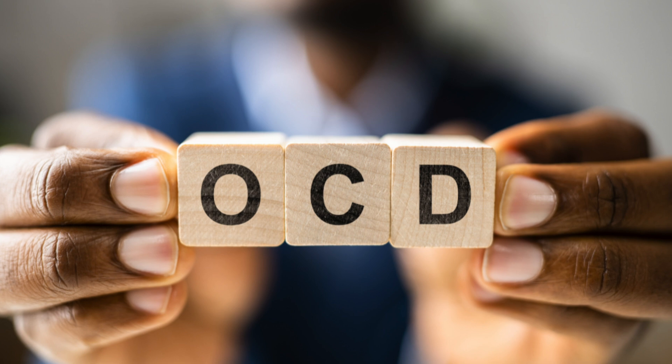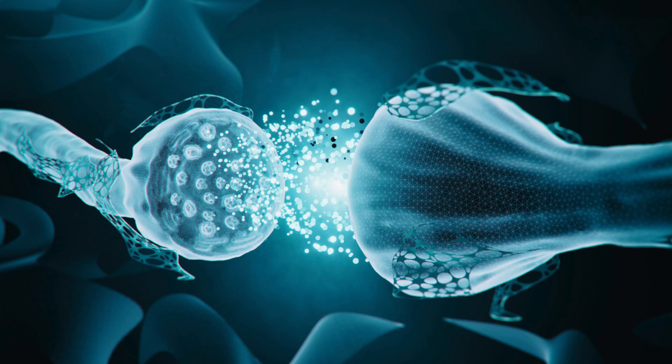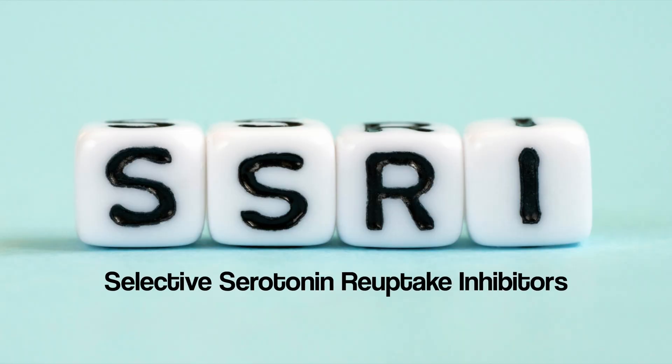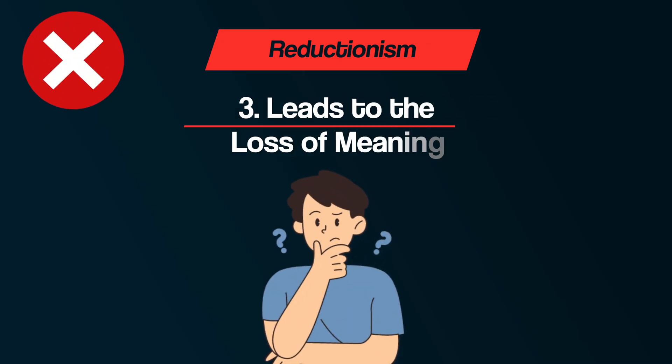Therefore, if psychology adopts a reductionist view of behavior, it helps psychology gain scientific credibility. Secondly, a reductionist approach has practical applications. For example, breaking conditions like OCD down to the low biological level of neurotransmitter imbalances has led to the creation of drug treatments — SSRIs are a type of drug that specifically increase the levels of serotonin in the brain, which some researchers found to help reduce OCD symptoms.